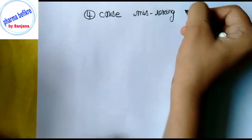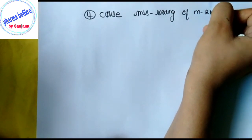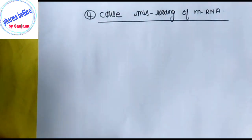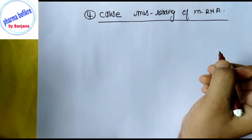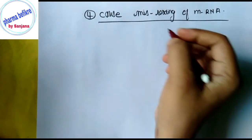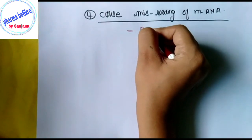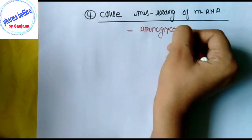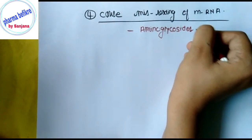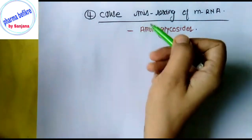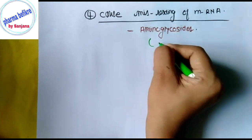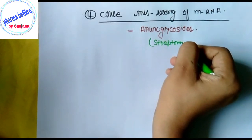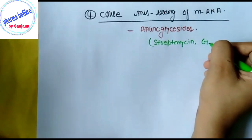The fourth group consists of drugs that cause misreading of messenger RNA. This group includes the aminoglycosides, with examples such as Streptomycin and Gentamicin.